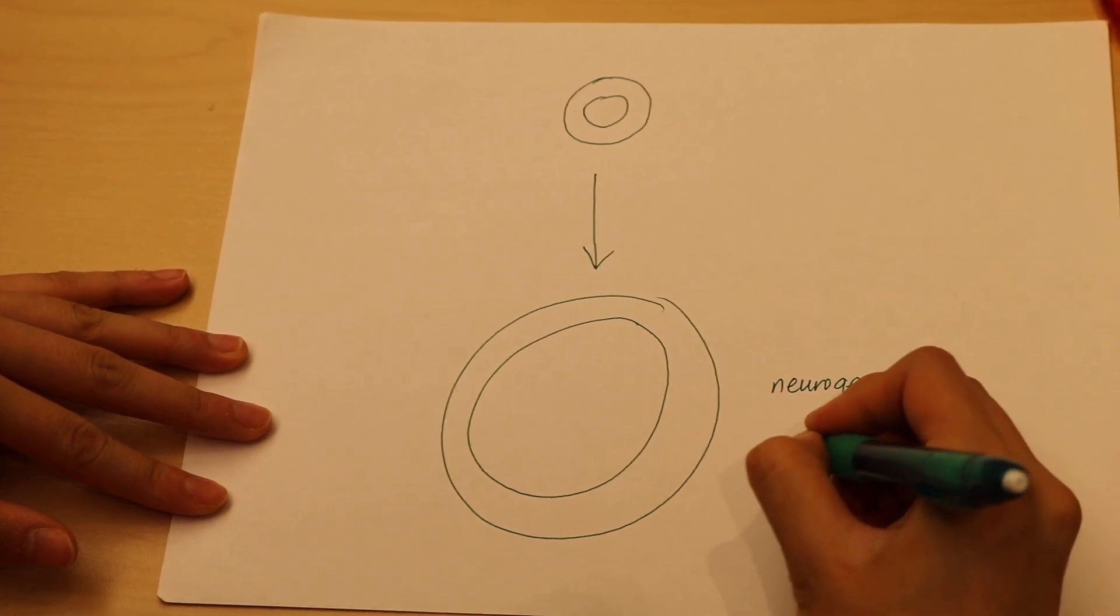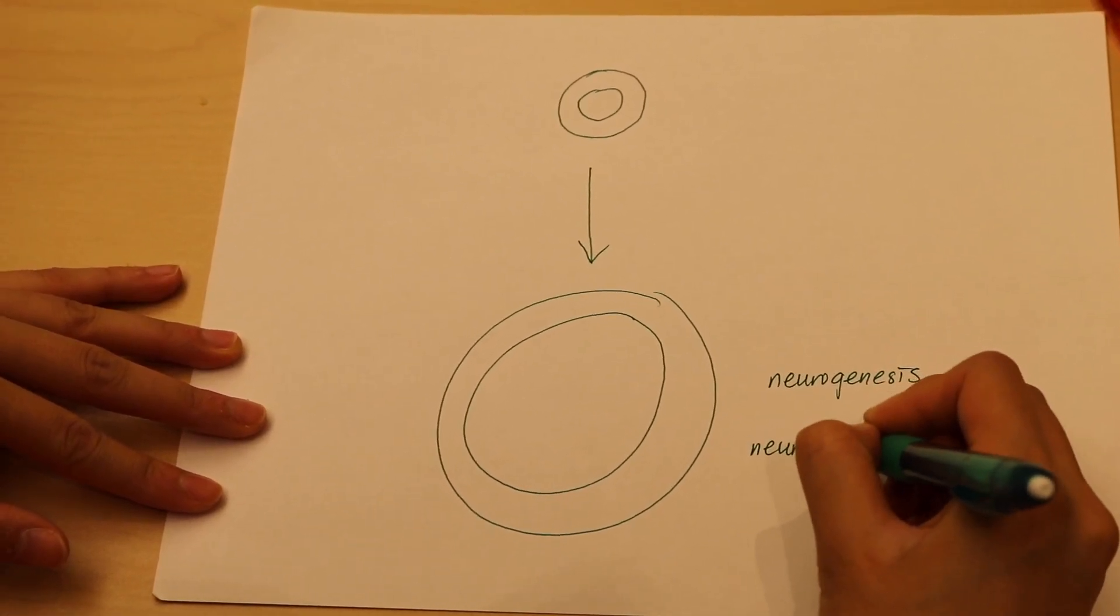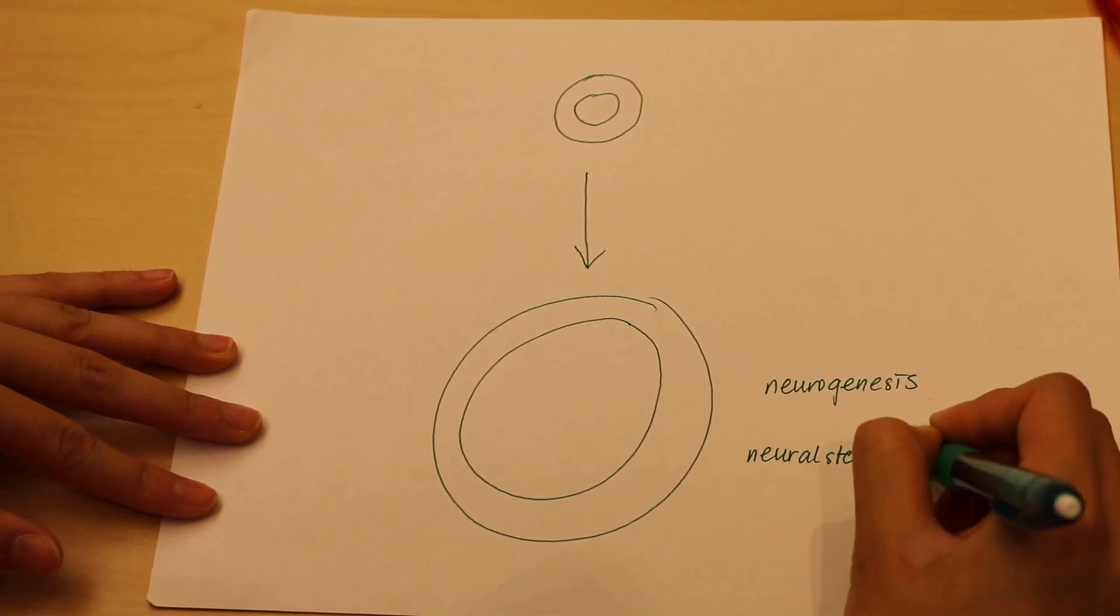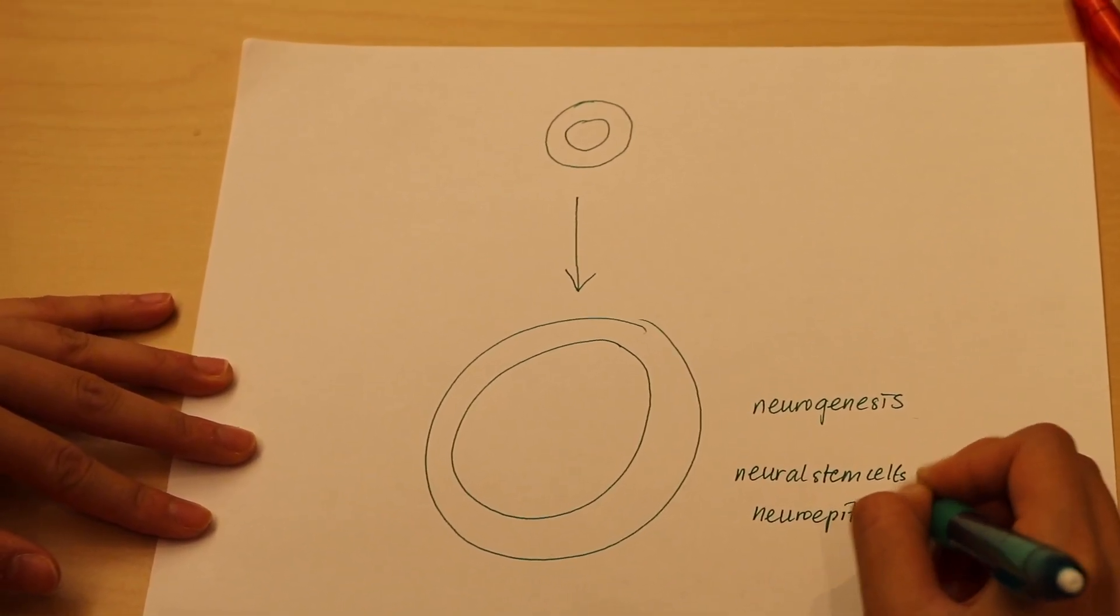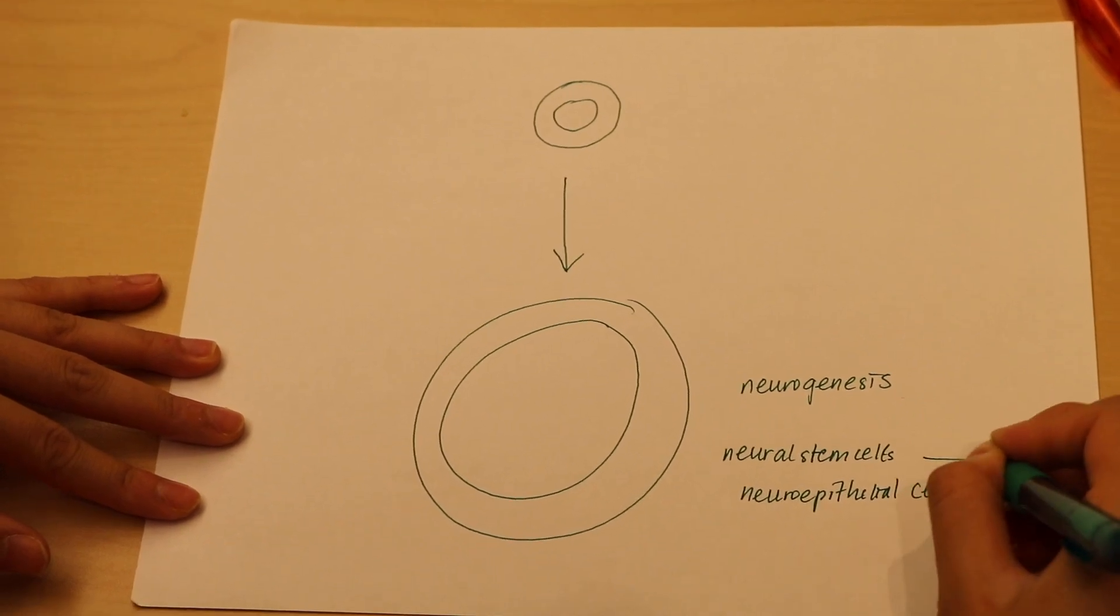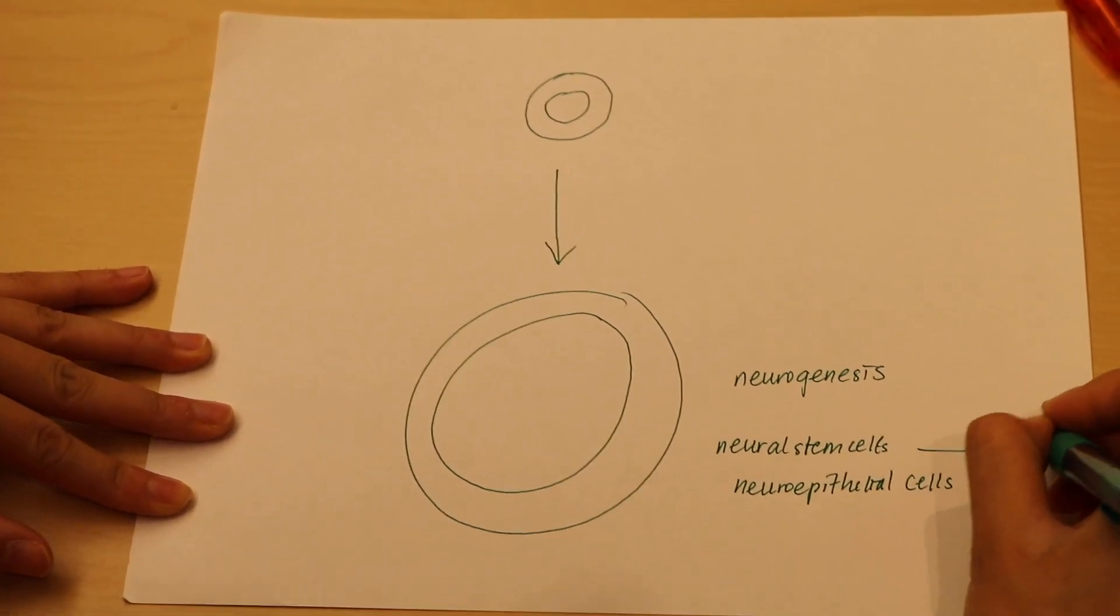Where our neural stem cells, otherwise known as our neuroepithelial cells, become mature neurons.